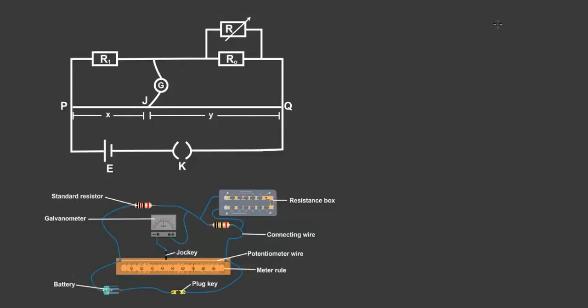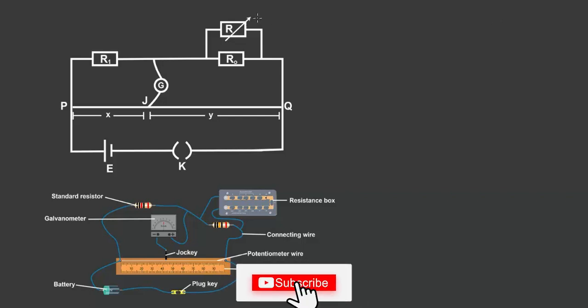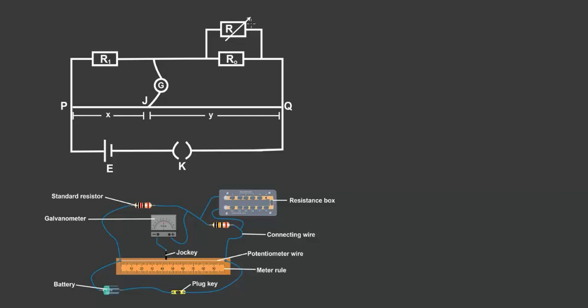Here is the experimental setup. You have the resistance box here, and the unknown or concealed standard resistor. You have the known standard resistor as R1, then G is your galvanometer. PQ is a potentiometer wire that represents the resistance wire, and J is the tip of the jockey — you're going to be moving the jockey along the potentiometer wire. Then you have your accumulator, which is your source of EMF, and the key.